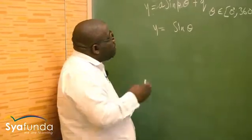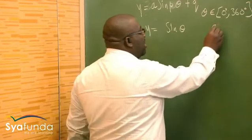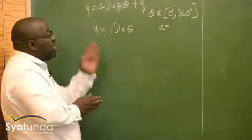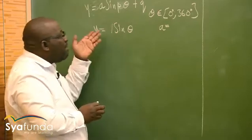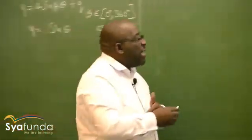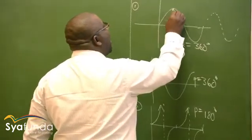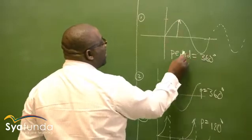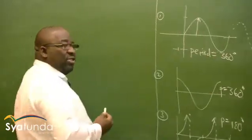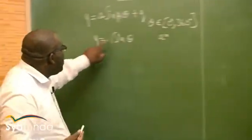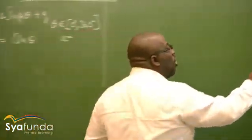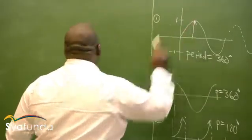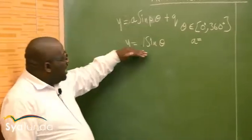In this particular case, my amplitude is 1 because there is no value written — so this is 1·sinθ. The amplitude is the highest point: this distance from the centre to the top must be 1 unit, and from the centre to the bottom it is minus 1. If the value of A is 2, then this graph will go up and turn at 2, not at 1.